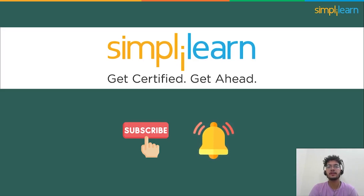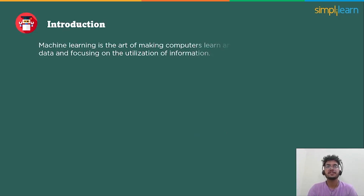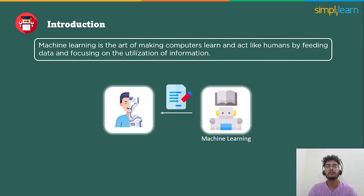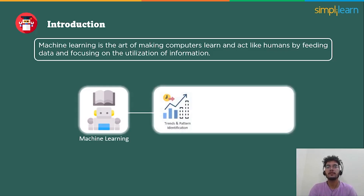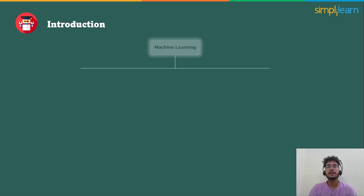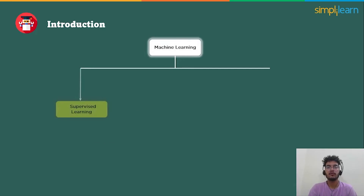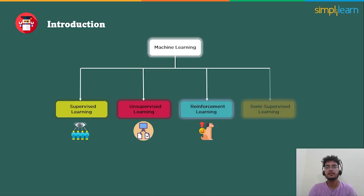Machine learning is the art of making computers learn and act like humans by feeding data, focusing on utilization of information and imitating the way that people learn, step by step improving its accuracy. Machine learning plays a major role in our day-to-day life — it is used in training, trend and pattern identification, automation, weather forecasting, and many more. Machine learning is classified into supervised machine learning, unsupervised machine learning, reinforcement learning, and semi-supervised learning.